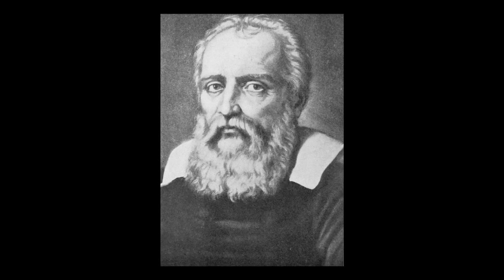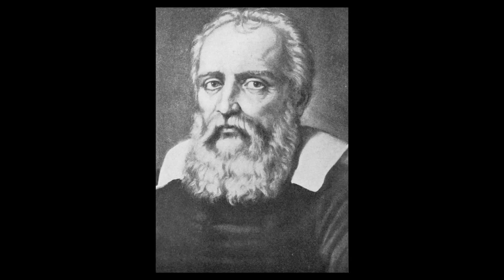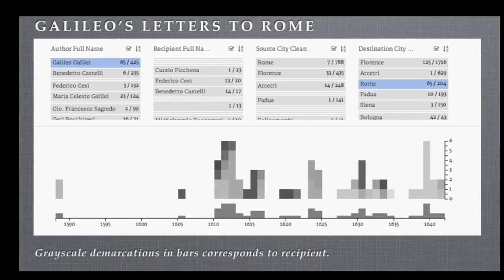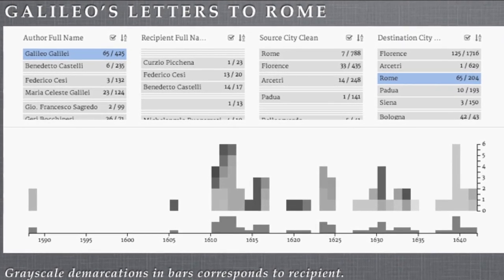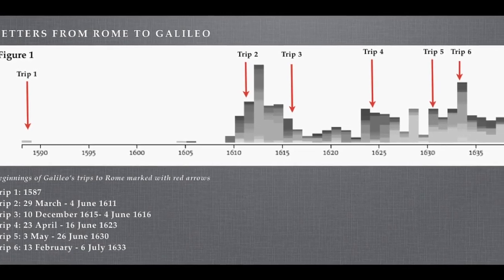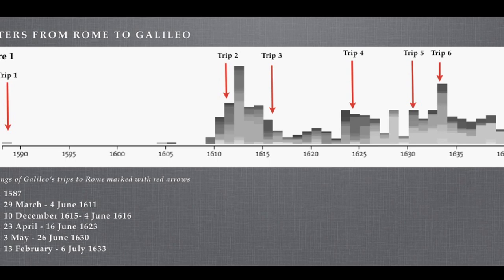The Galileo Project is trying to apply digital humanities tools and perspectives to the letters written by and to Galileo. He led a rich and interesting life full of discovery, difficulty, ideas, and lots and lots of letters. It occurred to us that it would be really interesting to map Galileo's correspondence — not only to see patterns in what survived, but perhaps as an analytic tool to talk about what hasn't survived.